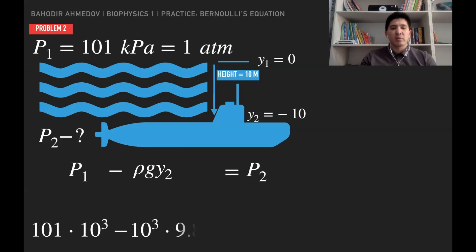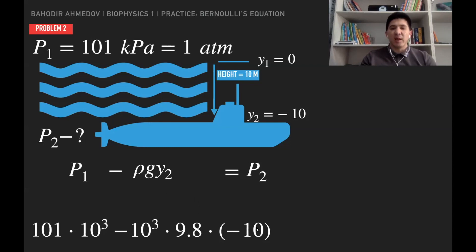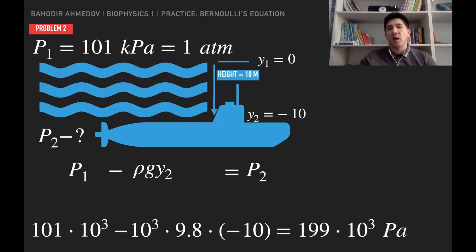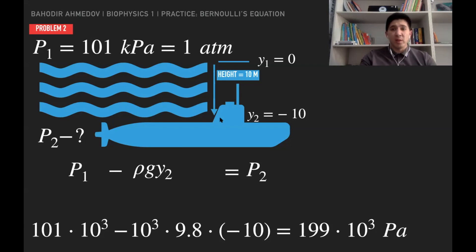Substituting values: P2 = 101,000 − 1000 × 9.8 × (−10) = 101,000 + 98,000 = 199,000 Pa, which is roughly equal to two atmospheric pressures. So the pressure at 10 meters depth is approximately 200,000 Pa. The conclusion: as height decreases (going deeper), pressure increases.